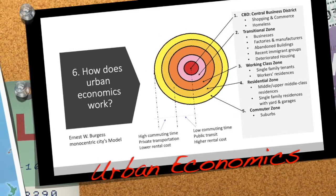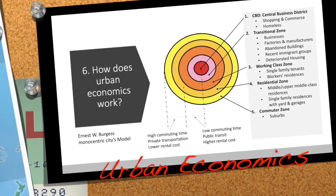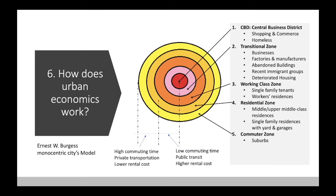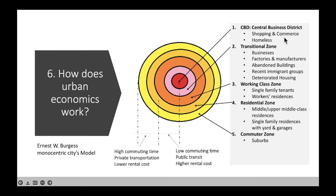Let's talk about urban economics and how it works. The chart here shows what is called the monocentric city model. In monocentric city models, this is what is going to happen in most cities. At the center of the city, you're going to have what is called the central business district, where you have mostly shopping centers, commerce, and so on — that's going to be downtown.